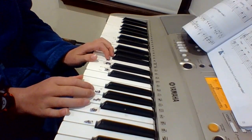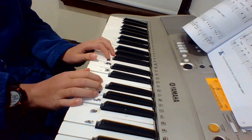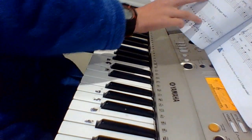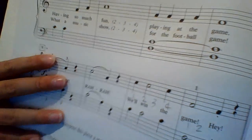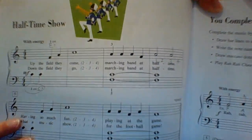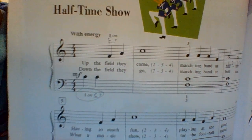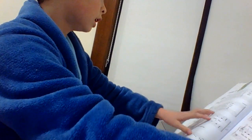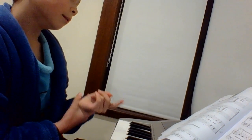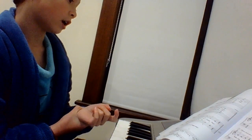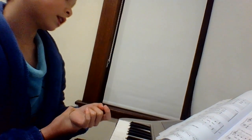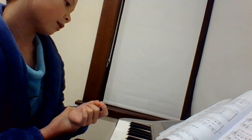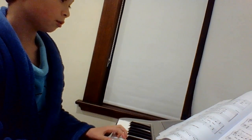Now add your own sound effects. I'm going to do that one more time — three, two, one — then you say the words, I'll put the rod in front of you and you read them. Up the field they go, up the field they come, marching band at halftime, down the field they go, marching band at halftime, having so much fun, playing at the game, what a music show for the football game. Rah rah rah rah, we'll win the game, hey! Okay, three, two, one, go.